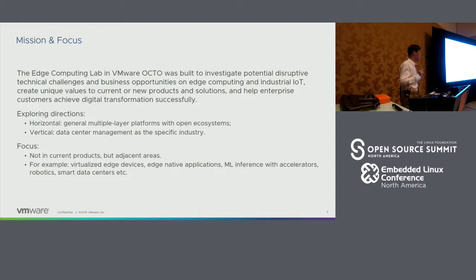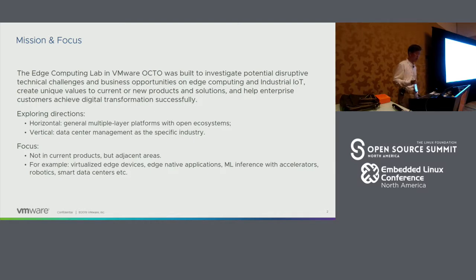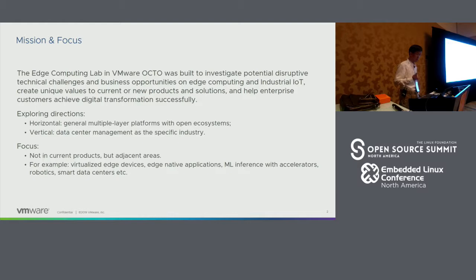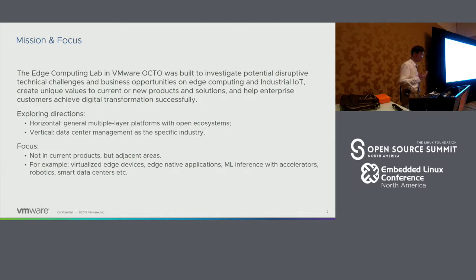Our focus right now is basically falling into two directions. One is horizontally — we want to create a general multi-layer platform with open ecosystems. The other is vertical, which is relative to VMware's whole business, the data center management. We want to see some new approach to do data center management with edge computing and IoT technologies. The focus here is around innovation projects, not existing products. Some examples I will talk about today are virtualized edge devices, edge native applications, machine learning inference on accelerators, and some others like robot smart data centers.